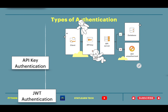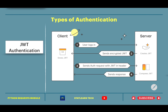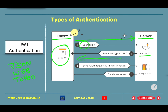The next type is JWT Authentication. JWT stands for JSON Web Token. A client wants to access server data. First, the user logs into the server, and the server creates and sends back a JWT token, which the client stores. Whenever the client makes another request, it sends the JWT token in the header. This means that for every subsequent request, you do not need to send the username and password — the JWT token handles authentication.